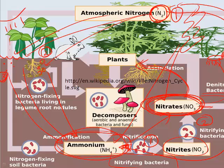Volcanoes also account for some denitrification. Nitrogen can be removed entirely from ecosystems when excess nitrate and ammonium are not taken up by plants — they mix with rainwater and get washed into soil, groundwater, and streams. If these nitrogen compounds settle on ocean, lake, or river bottoms, they form sediments that eventually become rocks, locking up nitrogen compounds for centuries until weathering releases them.